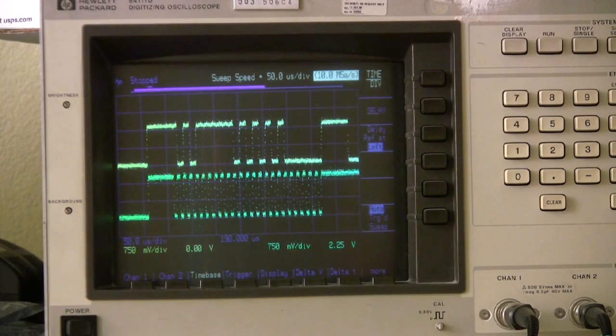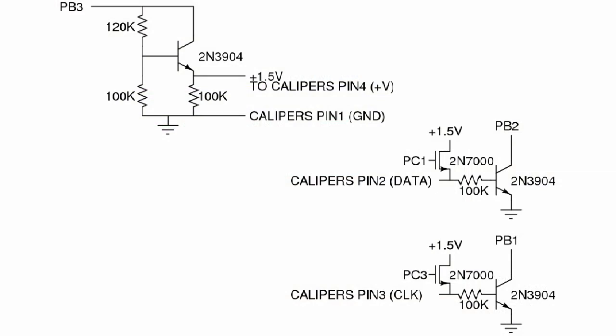We can use our microcontroller to wait for each bit to come in. Because the calipers are designed to run off a single 1.5 volt battery, we had to make a little bit of analog circuitry with a few transistors to power the calipers from our 5 volt supply.